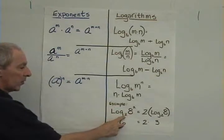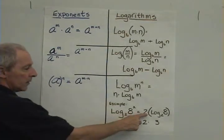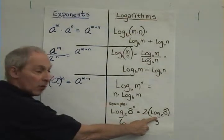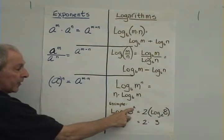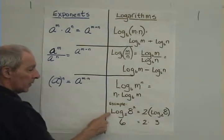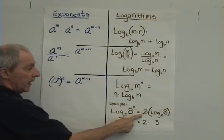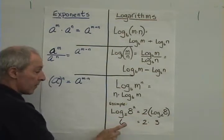Now 64, 2 to the sixth power is 64. The log base 2 of 8 is 3, and our rule says that we can take this exponent and put it in front of the log here, that's what we've done, and multiply that twice. 2 times 3 is the same as 6.